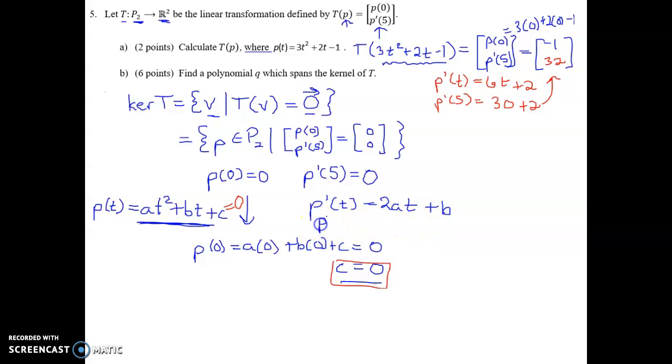Now we can plug in 5 to that derivative. So this is 2 times A times 5 plus B. And if P is in the kernel, then this needs to equal 0. So 10A plus B equals 0, so B equals negative 10A.